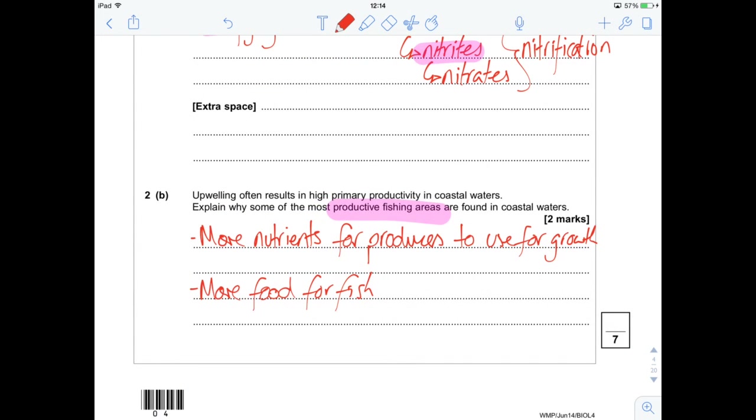Not a bad question, question 2. Probably one of the nicer nitrogen cycle ones. And that gives us 7 out of 7. Thanks very much for watching, guys. I hope that's been useful. Please stay tuned for the rest of the questions from June 2014's Biology 4 exam paper. Please like, comment, and subscribe.